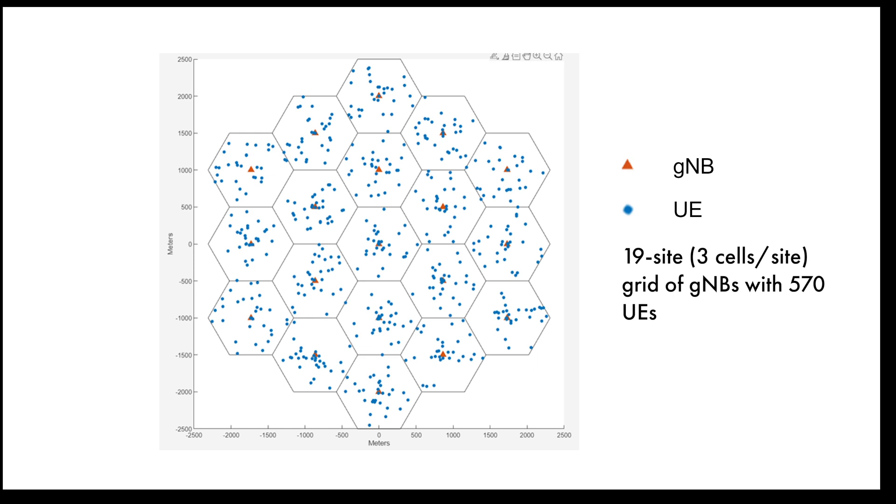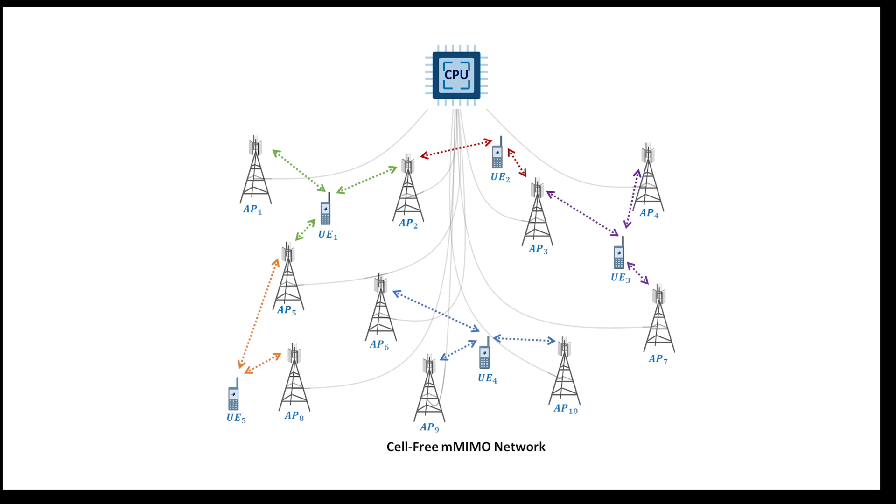You can then take the simulation and scale it up to model and simulate a large 5G network. You can use different massive MIMO techniques, including cell-free MIMO, which is a promising technology for 6G wireless networks.